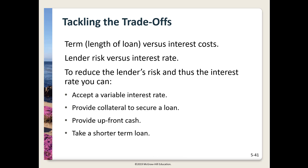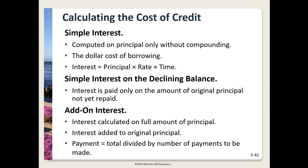When considering a loan or financing, there are trade-offs between features you'd like versus the rate you'll pay. A shorter-term loan is less risky for the lender, so you'll get a lower rate, but your payments will be higher. You might want a low-payment loan with a large balloon payment at the end, but this is risky for the lender, hence a higher rate. Basically, the riskier the loan is for the lender, the higher the rate demanded. What can you do? Accept a variable rate, provide collateral, make a bigger down payment, or take a shorter-term loan.